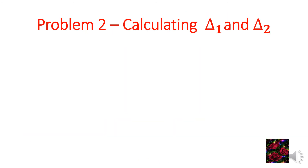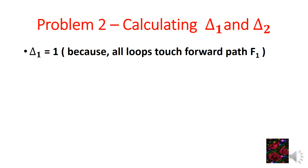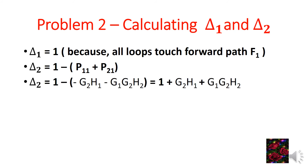Calculating delta1 and delta2: delta1 equals 1 because for forward path 1 all loops are touching, so we cannot eliminate these loops. However, delta2 equals 1 minus (P11 + P21) because for forward path 2, loops P11 and P21 are non-touching. Therefore delta2 = 1 minus (minus G2·H1 minus G1·G2·H2), which gives delta2 = 1 + G2·H1 + G1·G2·H2.